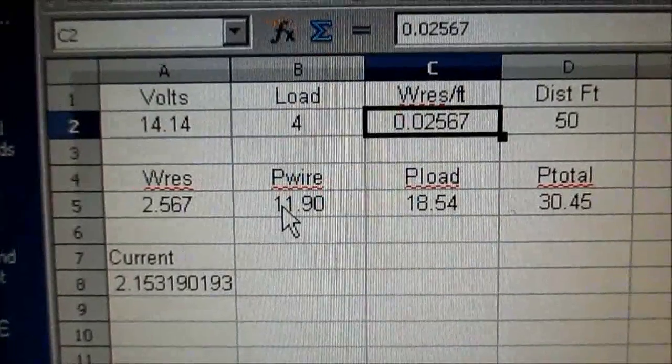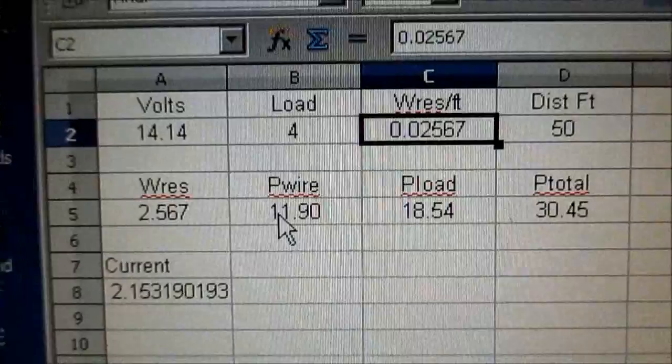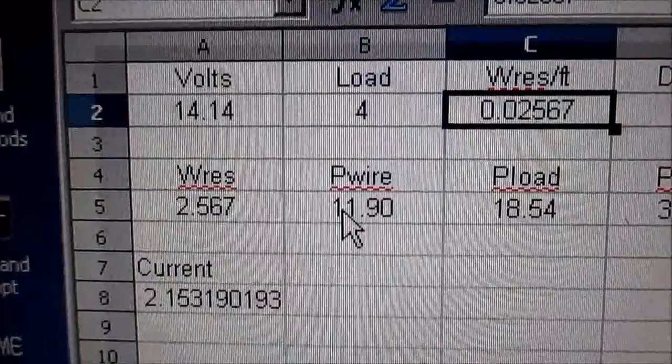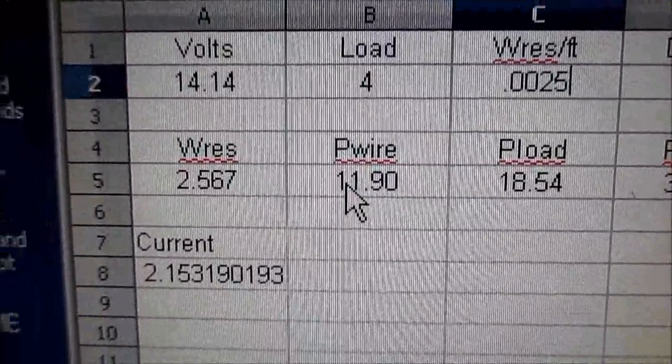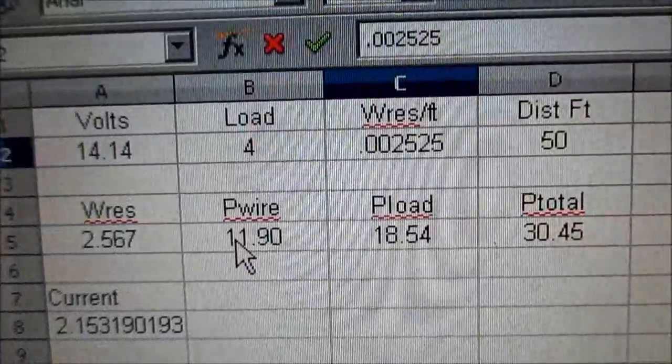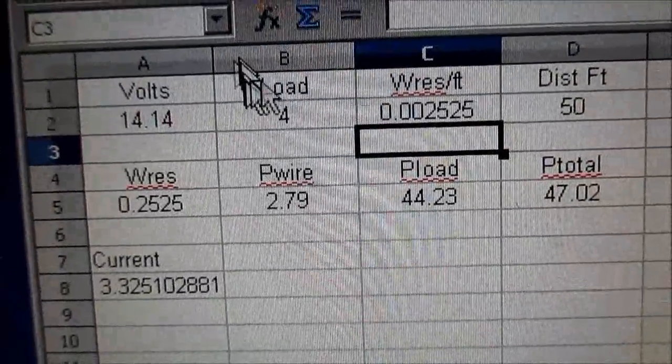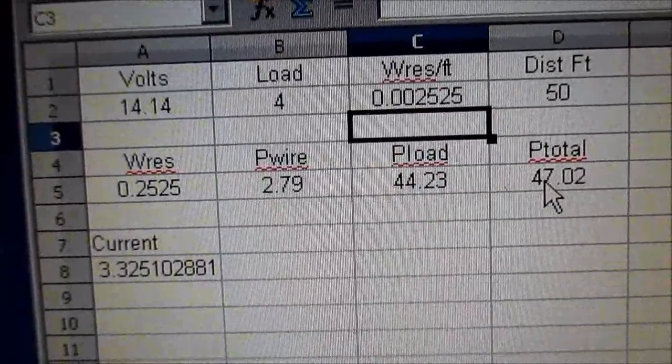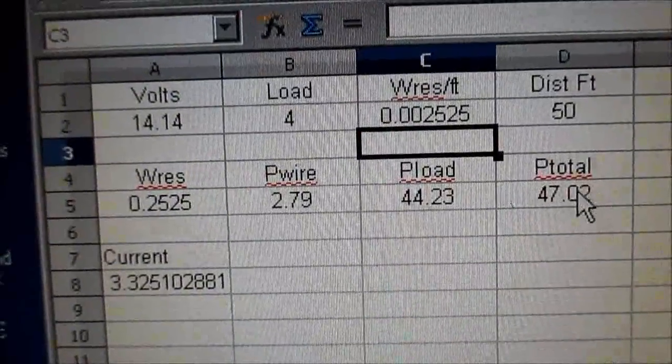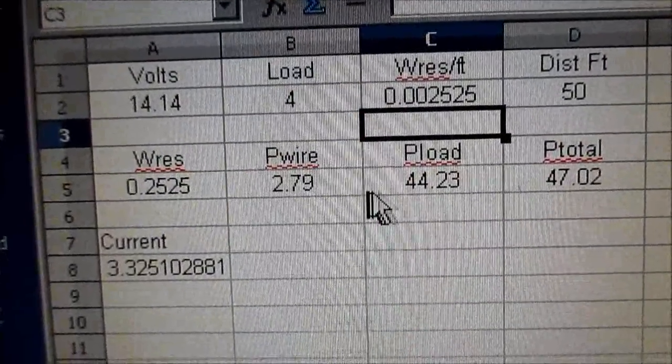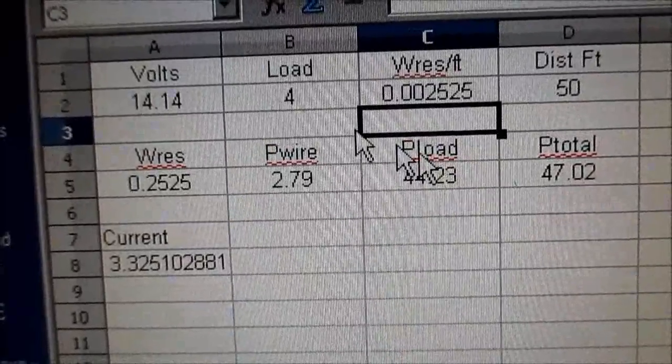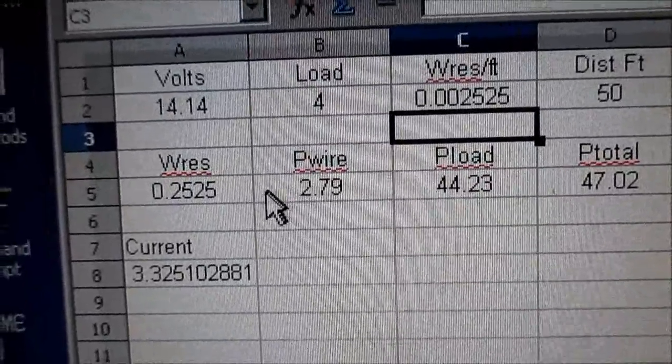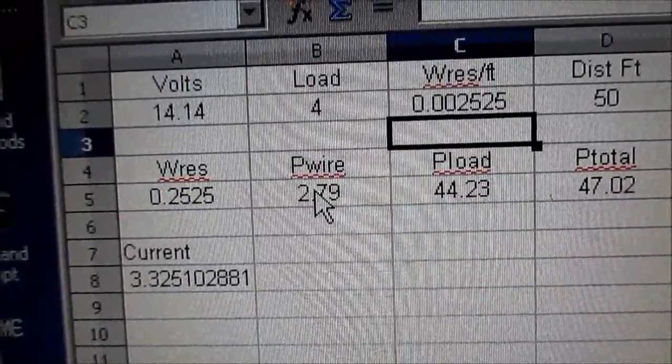And using Wikipedia, the resistance per foot of 14-gauge wire is 0.002525. And everything else being the same, power total is now 47. We're losing about 6 watts. Not nearly as bad. But we're still losing about 6 watts and about 3 watts in the wire with the 4-ohm load.